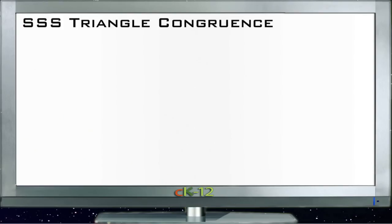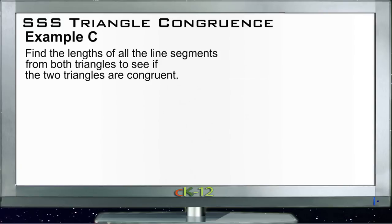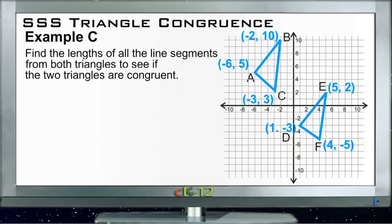Let's take a look at Example C. Example C asks us to find the lengths of all the line segments from both triangles to see if the two triangles are congruent. Here are our two triangles, ABC and DEF. To find the lengths of the sides, we're going to use the distance formula. I'll start with line AB.